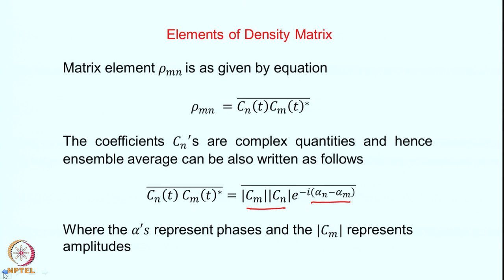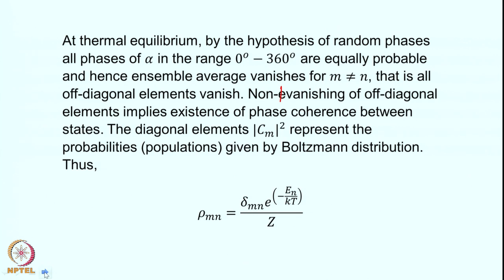What do the diagonal elements represent? When m = n, the phase difference (α_m - α_n) goes to zero, giving |C_n|². The modulus squared |C_n|² represents the probability that the spin system is in that eigenstate. Taking the superposition of individual eigenstates to represent the wave function, |C_n|² essentially represents the probability that the spin system is in that eigenstate.